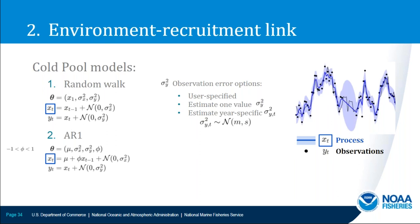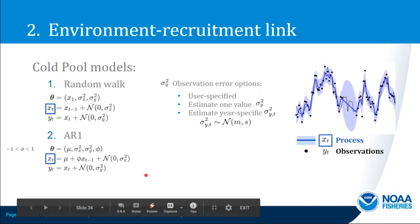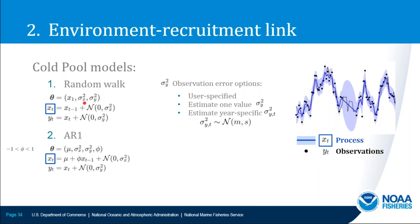In this example, WAM fits cold pool environmental data within the assessment model. There are two options for the process: treating cold pool as a random walk or as an AR1 autoregressive process. Estimating observation and process errors produces an estimate of the cold pool within the assessment — X sub T. Several options are available for handling observation error. Once the cold pool is estimated within the assessment, it must be linked to the population, and for recruitment there are multiple ways the environmental covariate can influence expected recruitment depending on how recruitment is modeled — random walk, random about a mean, or stock-recruitment relationships like Beverton-Holt or Ricker.